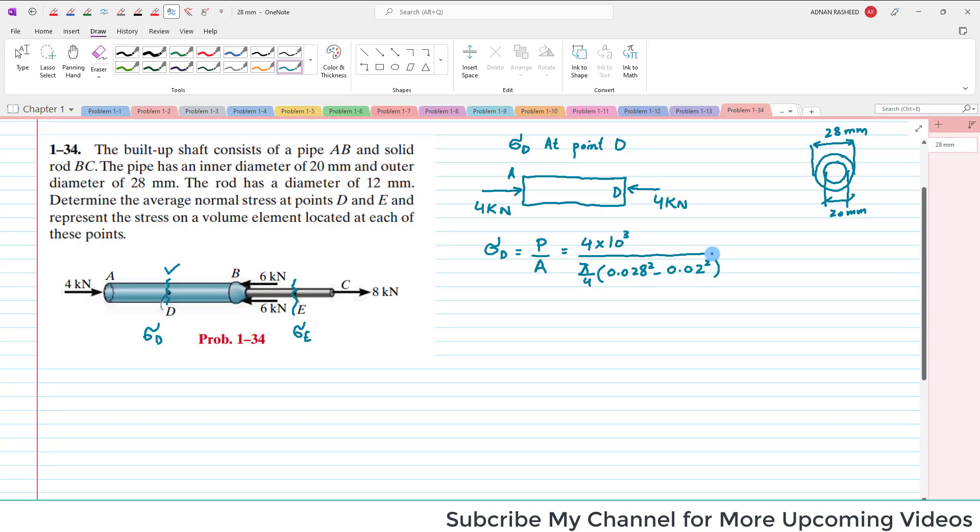So when you calculate this, the normal stress at point D will be 13.3 times 10 raised to power 6 Pascals, and that will be equal to 13.3 megapascals.